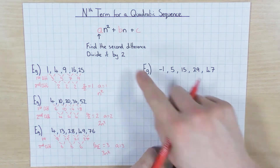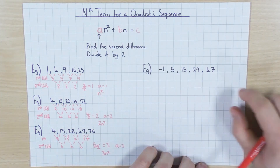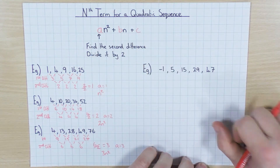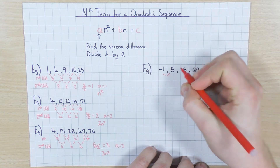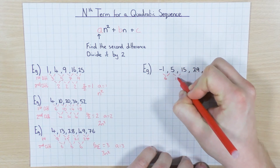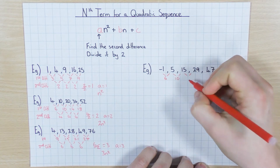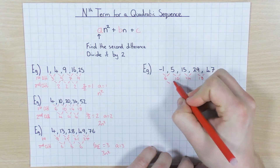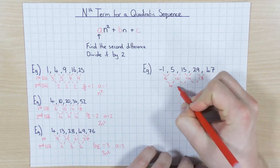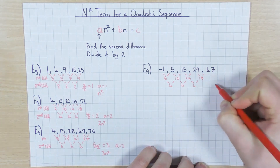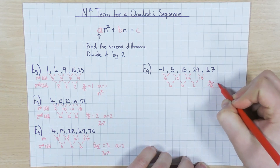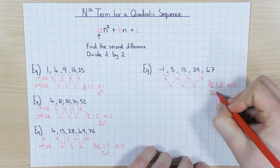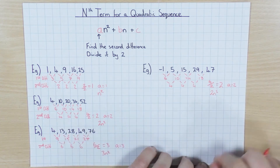Now let's have a look at trying to work out the whole nth term. Here is another quadratic sequence and this time I'm going to work out everything. I still start off by finding 'a', so I find the first difference — which is 6, 10, 14, and 18 — then the second difference, which is 4, 4, 4. Once I've got the second difference I halve it to give me 2, so a equals 2 and I have 2n squared.